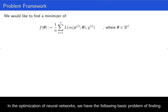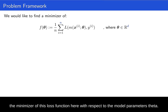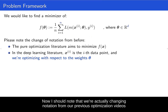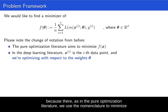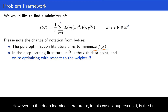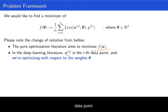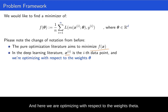In the optimization of neural networks, we have the basic problem of finding the minimizer of this loss function with respect to the model parameters theta. I should note that we're changing notation from our previous optimization videos, because there, as in the pure optimization literature, we use the nomenclature to minimize f of x. However, in the deep learning literature, x — in this case x superscript i — is the ith data point, and we are optimizing with respect to the weights theta. So we have an f of theta, and we're optimizing with respect to that.